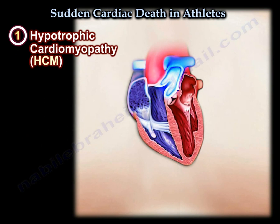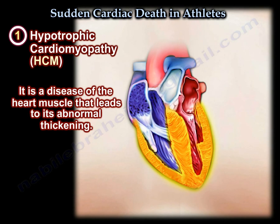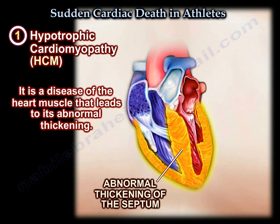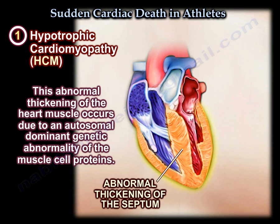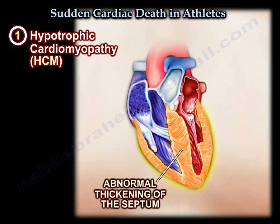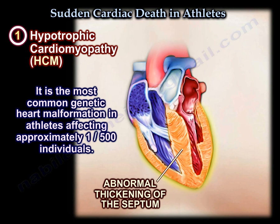Hypertrophic cardiomyopathy is a disease of the heart muscle that leads to its abnormal thickening. This abnormal thickening of the heart muscle occurs due to an autosomal dominant genetic abnormality of the muscle cell proteins. It is considered the most common genetic heart malformation in athletes, affecting approximately one out of every 500 individuals.